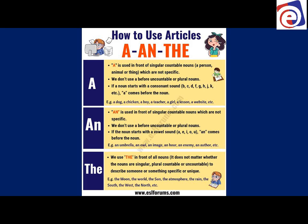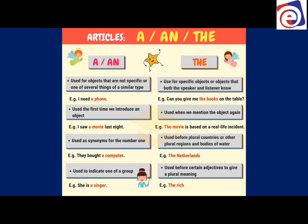We use 'the' in front of all nouns. It does not matter whether the nouns are singular, plural, countable, or uncountable. We use 'the' to describe someone or something that is specific or unique. For example: the moon, the world, the sun, I went to the market.